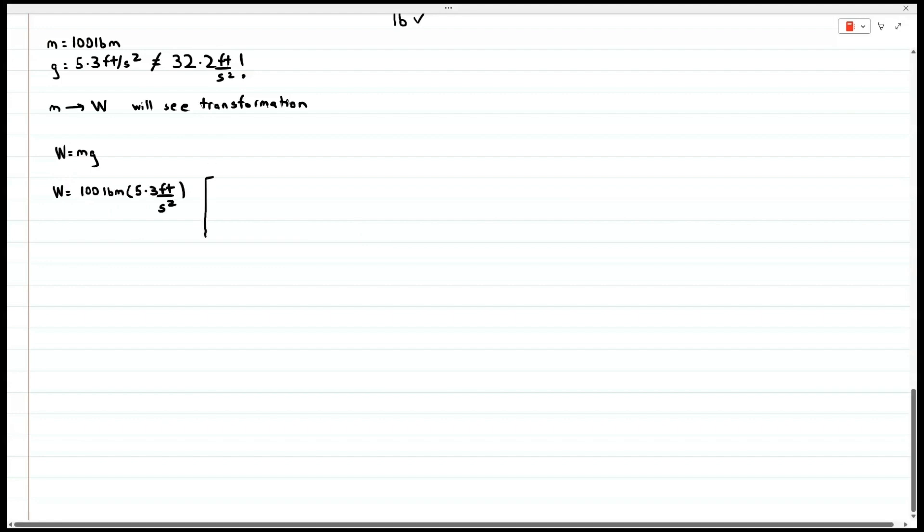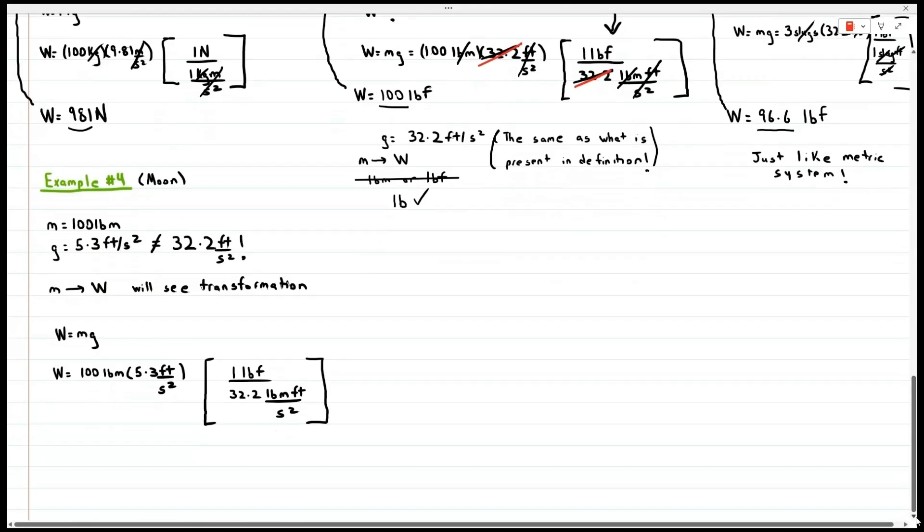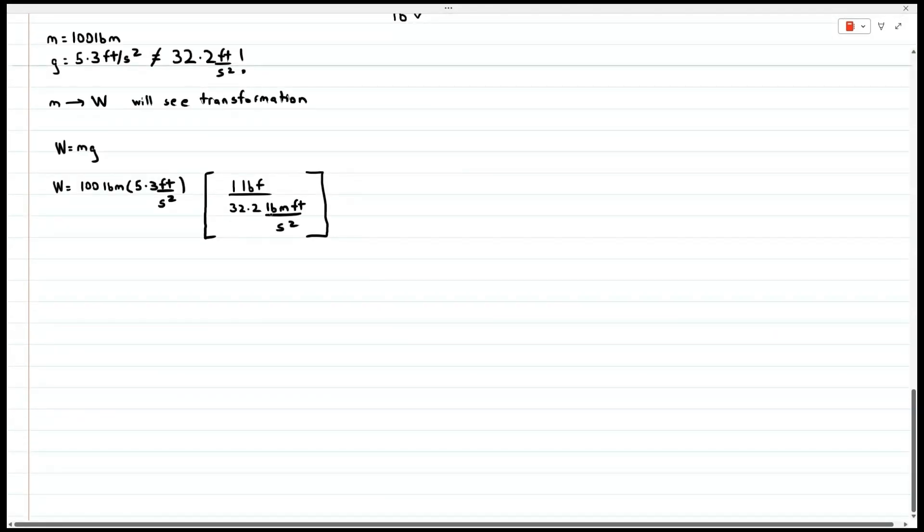We have our mass and our gravity on the moon. Then put our definition to convert from pound mass to pound force. What we see that the final weight value is going to be 16.46 pound force. And we see that transformation is evident going from the mass unit to the weight unit. And that's of course because gravity is not equal to 32.2 on the moon.